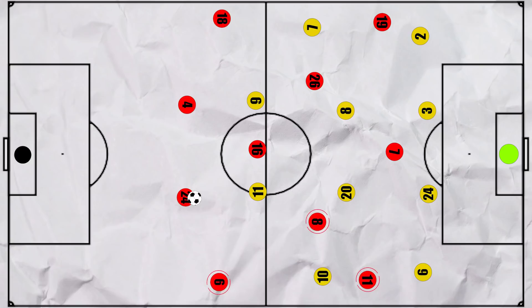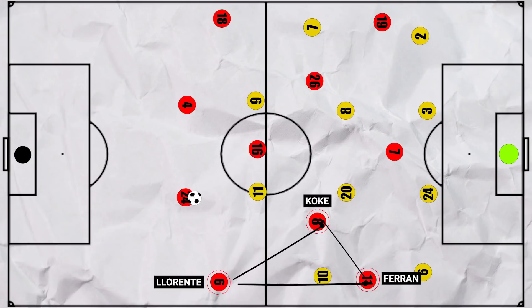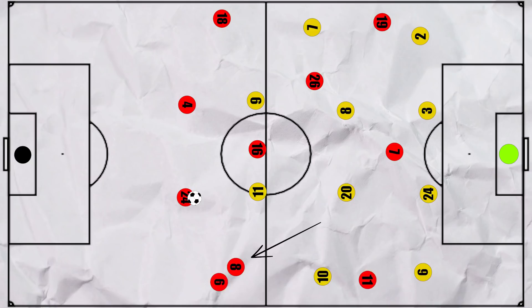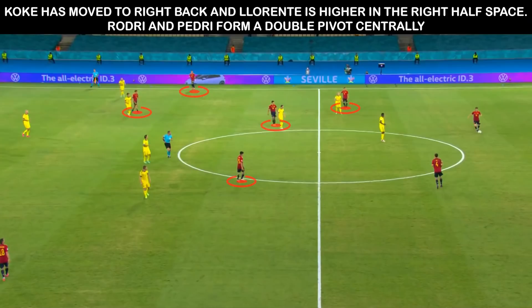Spain could still be effective down both flanks however. The right-side triangle of Llorente, Koke and Ferran were incredibly fluid and consistently interchanged positions. But most commonly, Koke would drop into the right back slot, with Llorente moving wide to allow Ferran into the half space. Or, Llorente could move into the half space himself, with Pedri and Rodri moving across, whilst Ferran stayed wide.